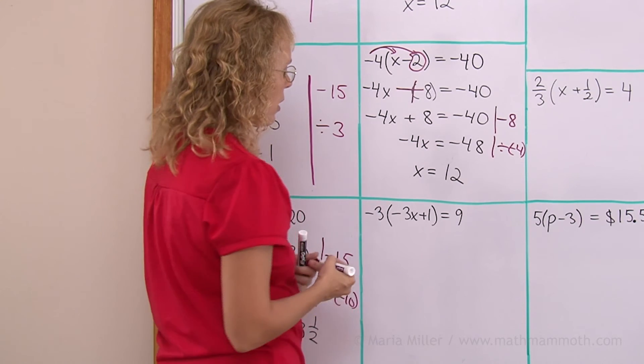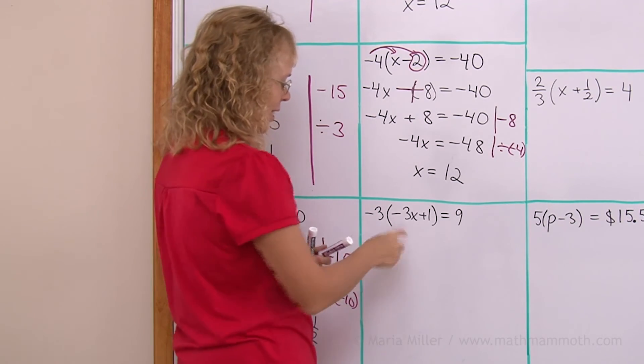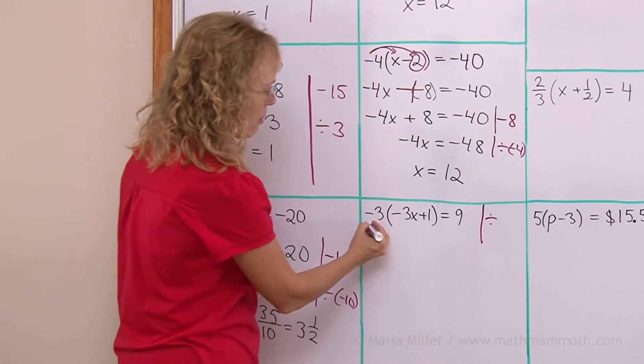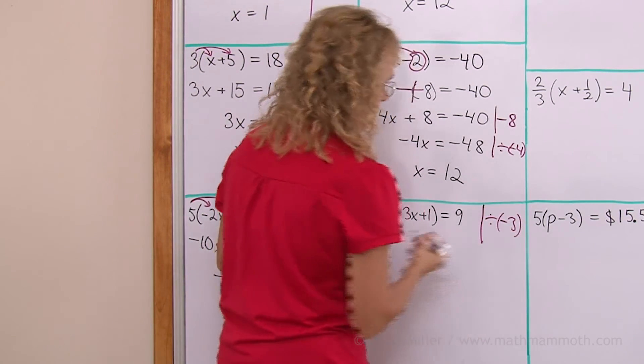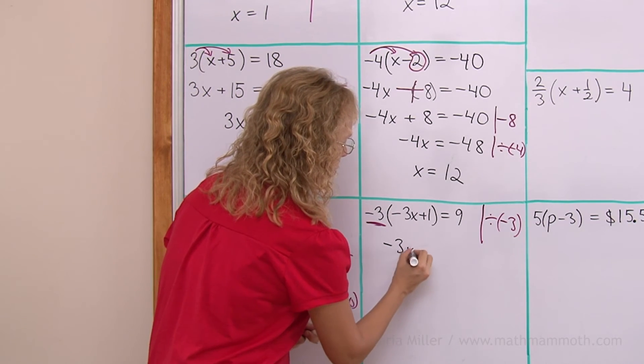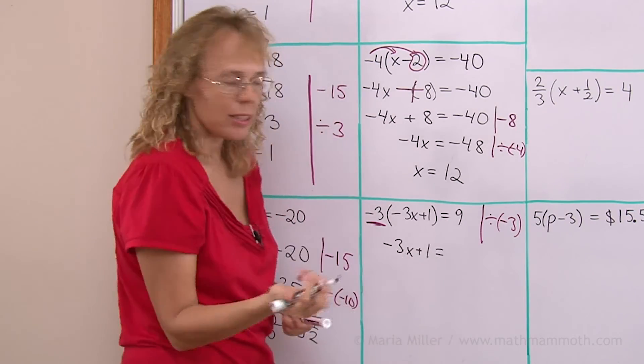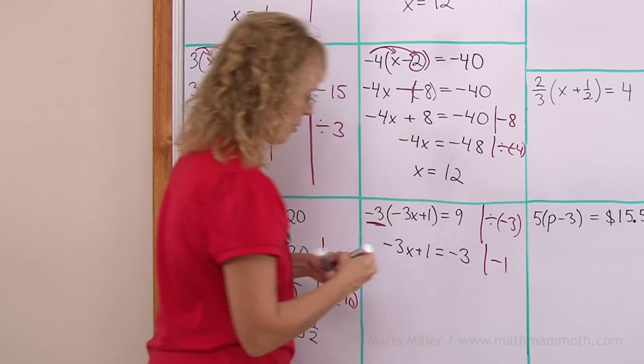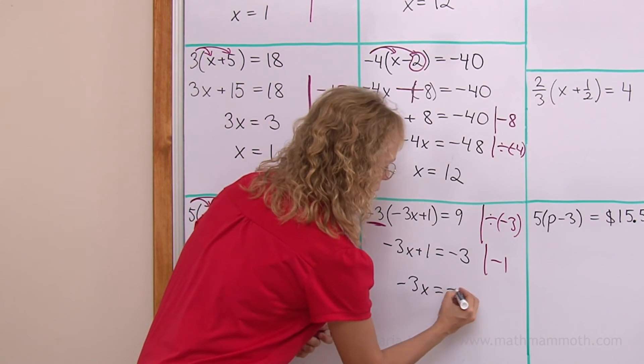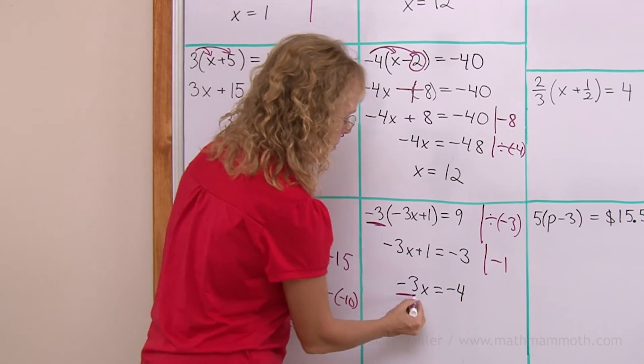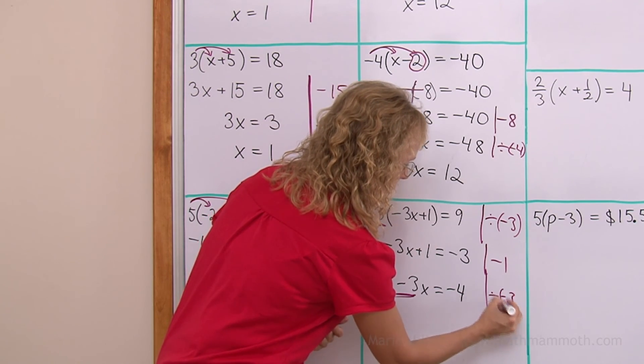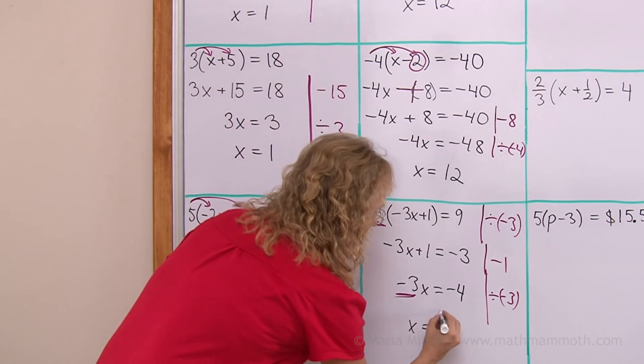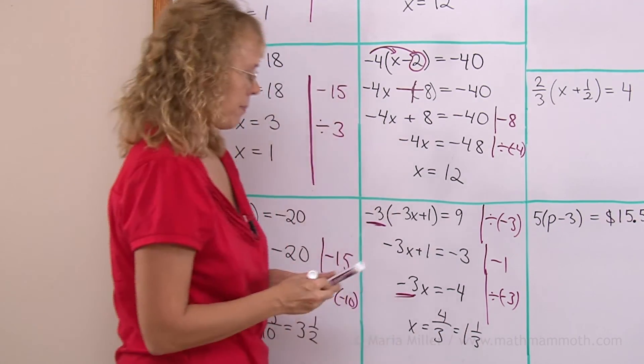This one. I can use distributive property here. But let me do it the other way now instead. Where we divide both sides by something. Divide both sides by what? It's this number here. Negative 3. Because then I'm left with negative 3x plus 1 here. And then 9 divided by negative 3 leaves me negative 3. Now get rid of the plus 1 next. So I subtract 1 from both sides. And I get negative 3x equals negative 4. And then lastly divide by this number. Divide by negative 3. So we get x equals negative 4 divided by negative 3. Which is the same as 4 over 3. Or 1 and 1 third.